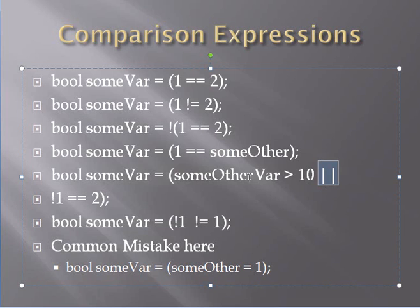So, some other variable is greater than 10 or 1 equals 2 and it gets reversed. So, that will always actually be true because just solely based on that.